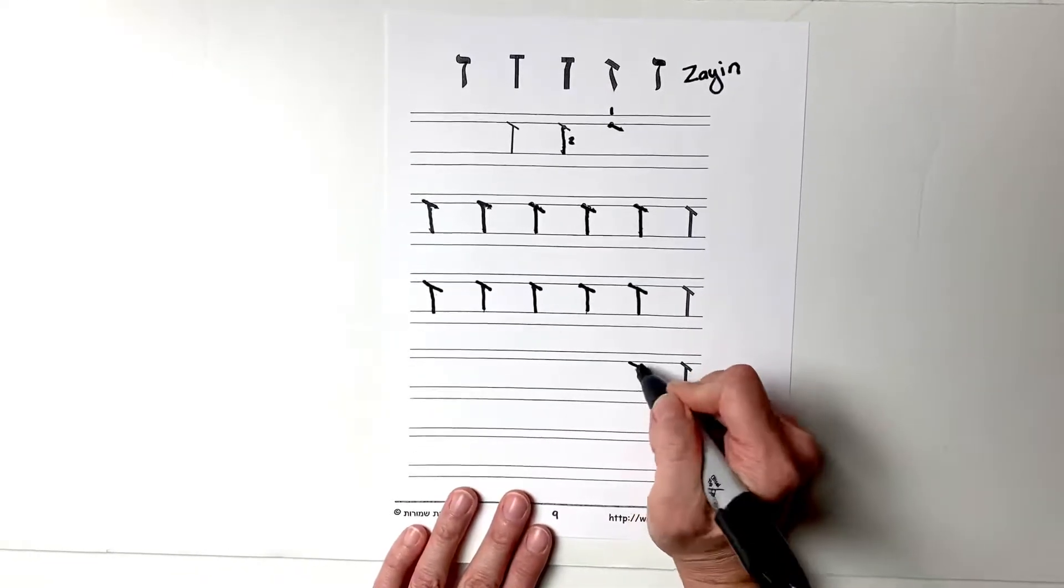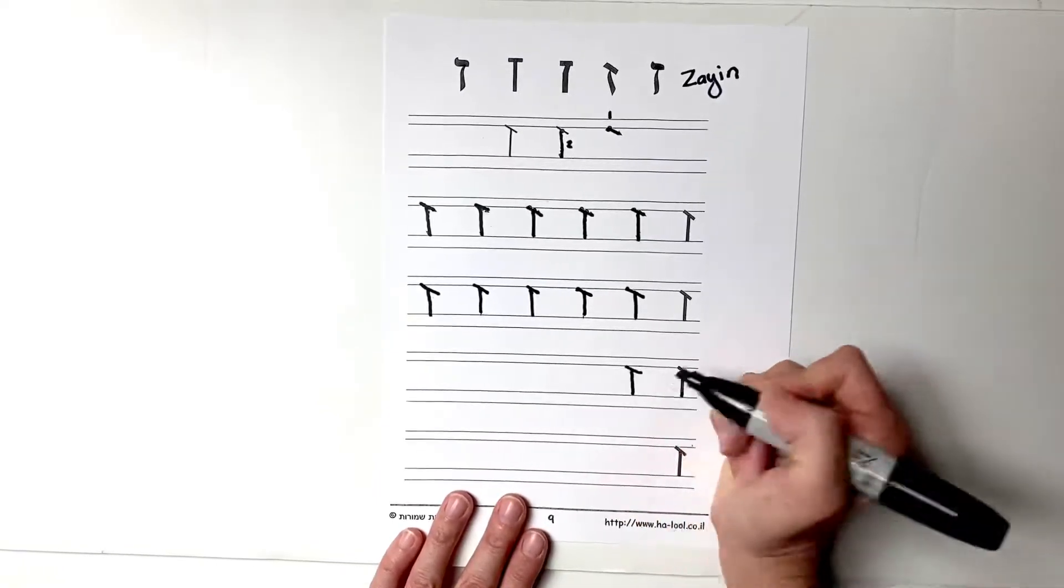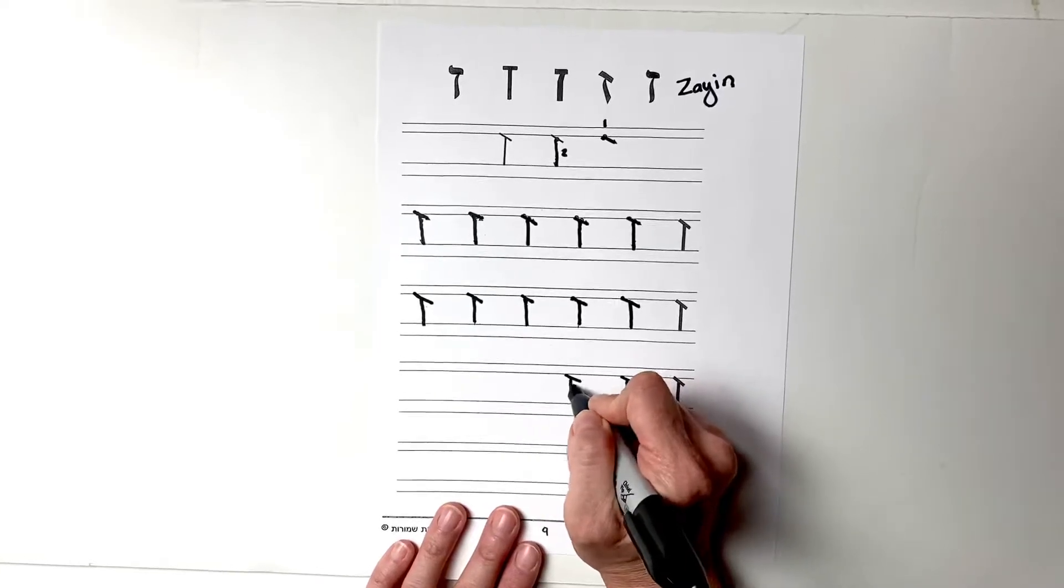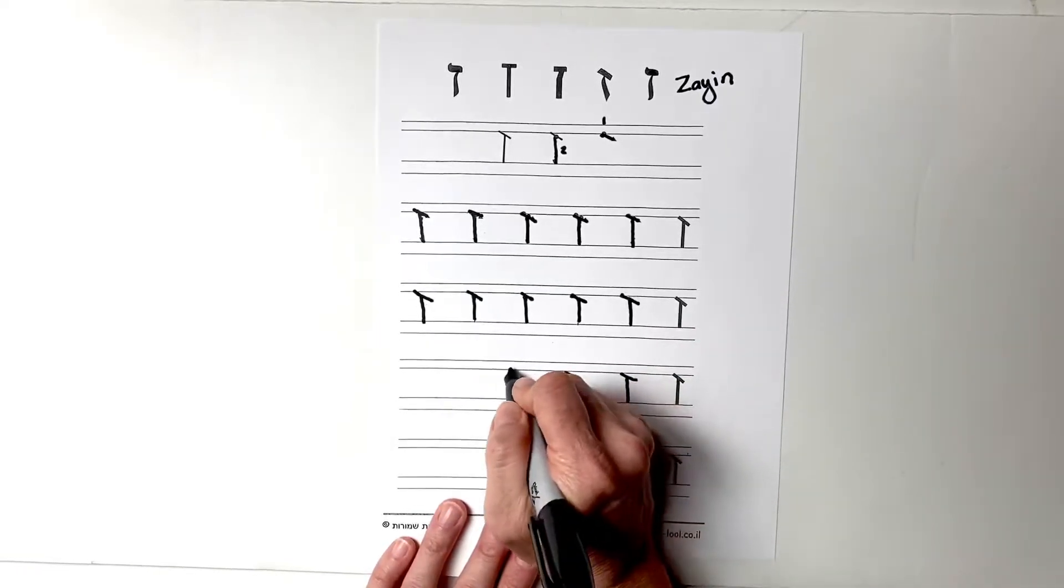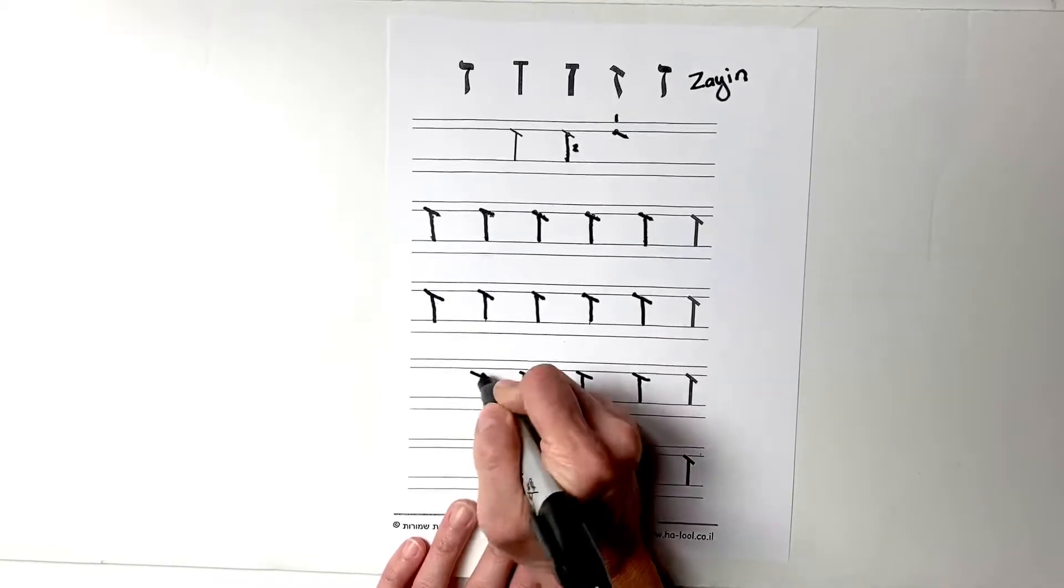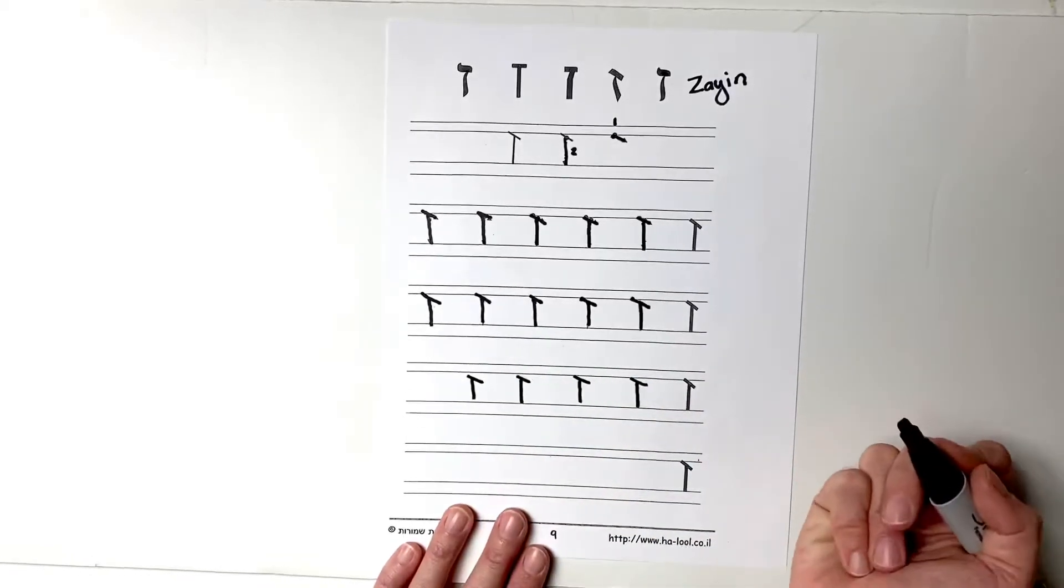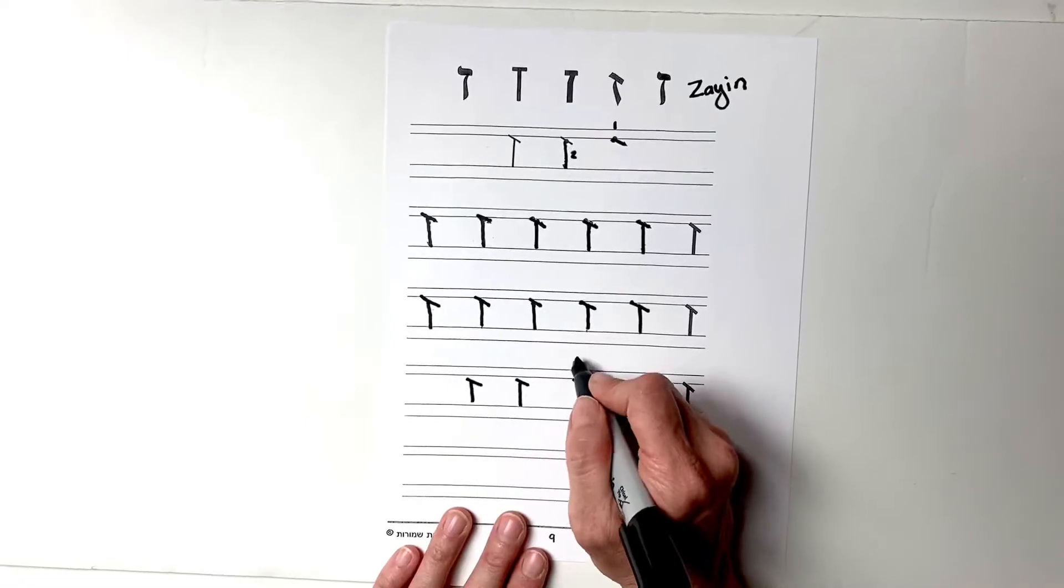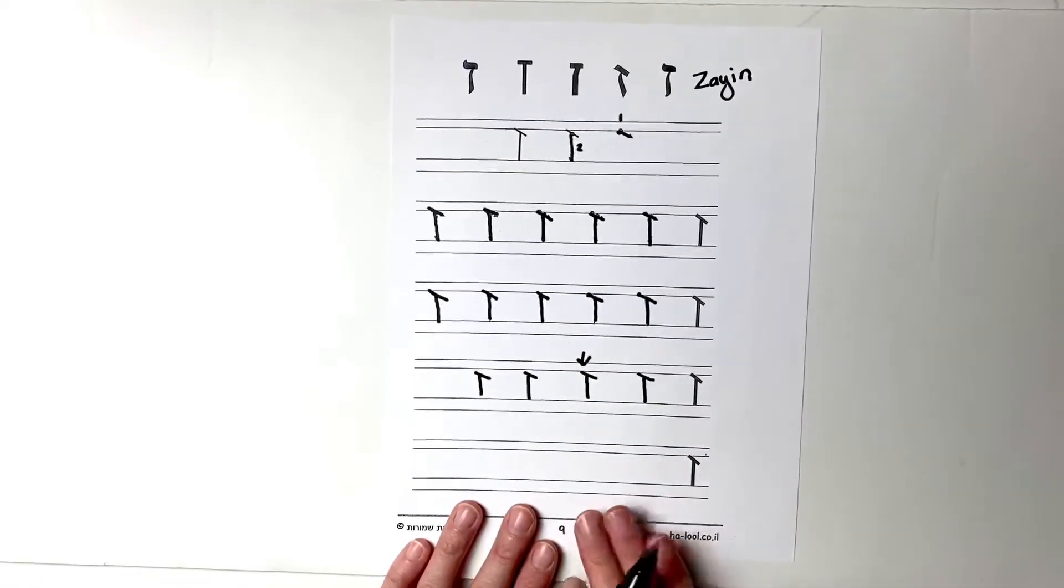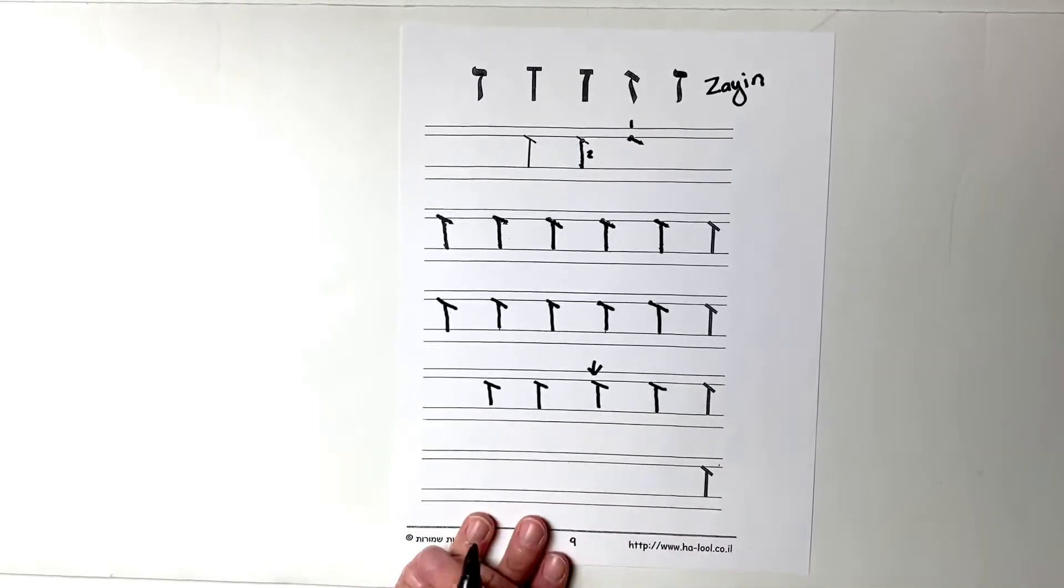Now I would like you to draw at least four or five Zions. Seventh letter of the Hebrew alphabet. And once you've drawn at least four or five, you might even be able to fit six on here. Pick the one that you think you did the best. I think this one looks like my best. You could star it or draw an arrow, then drop down and finish off this line.